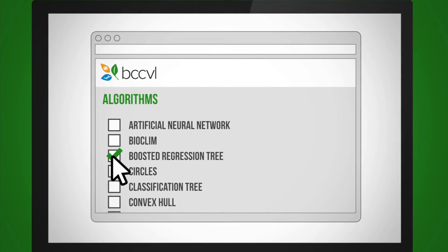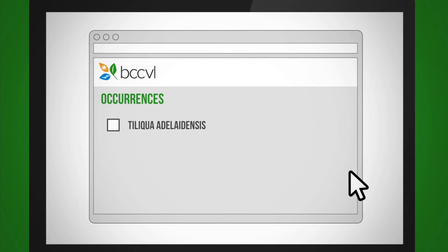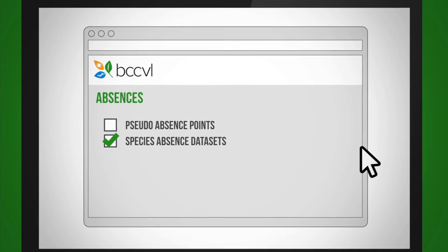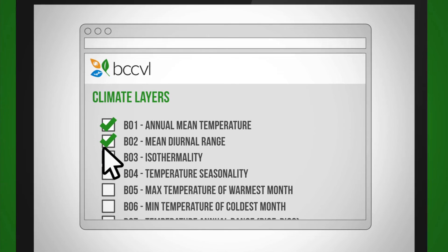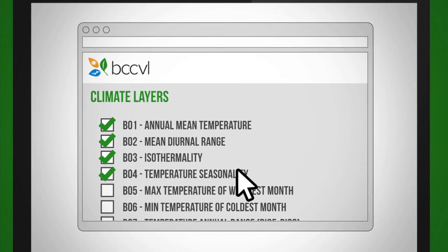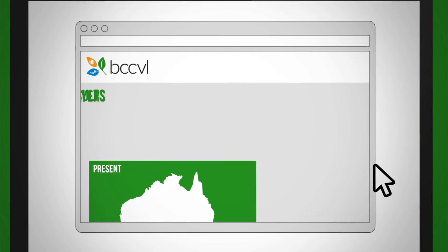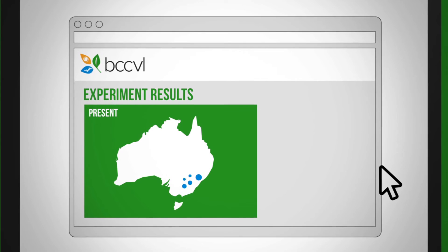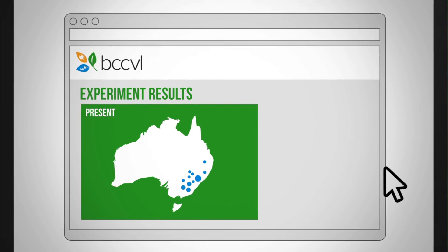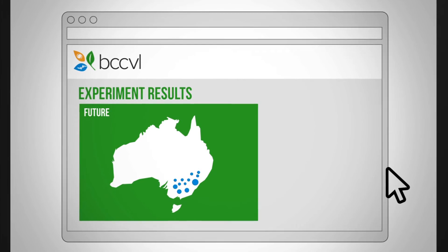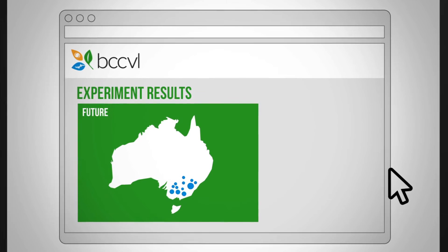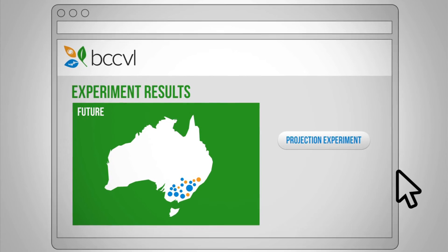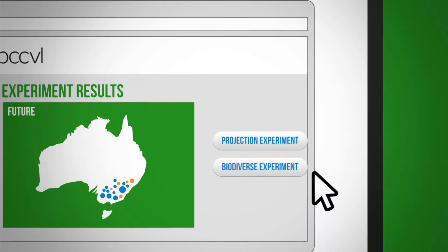Michelle selects her algorithms, occurrences and absences from the dataset she downloaded, and lastly chooses climate layers. Once Michelle's species distribution model is complete, she has the option to extend her research to discover future habitat locations and the species that share that habitat by running projection and biodiverse experiments.